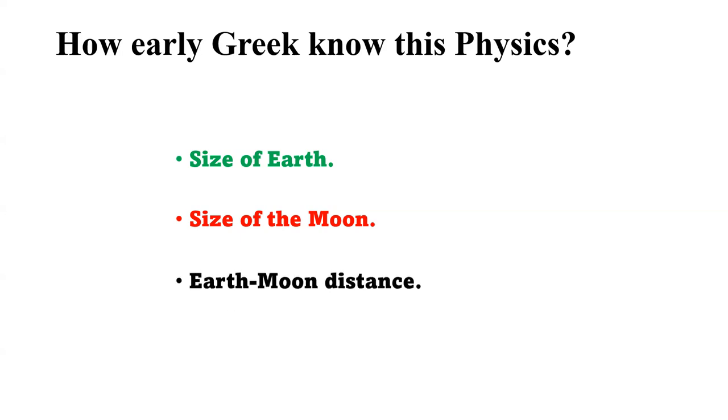The third task is the distance from the Earth to the Moon. They measured this distance long ago, about 2000 years ago. All of these tasks - the size of the Earth, the size of the Moon, and the distance between Earth and Moon - they measured all of these things very long ago.